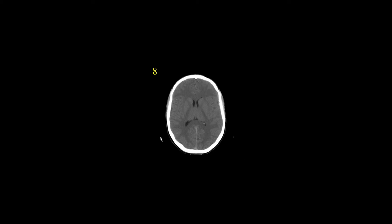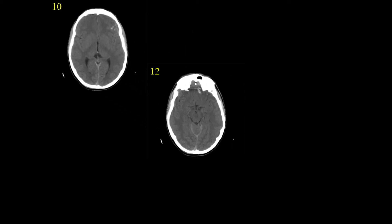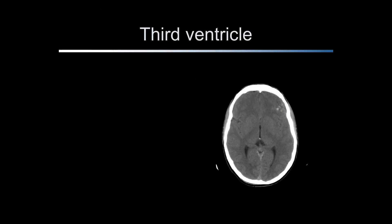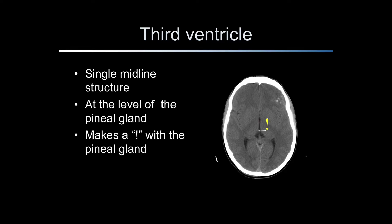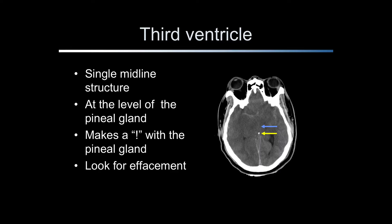The third ventricle is a single, midline, slit-like structure located at the level of the pineal gland. The pineal gland is typically calcified in adults and doesn't usually become calcified until after the age of six years. It has no blood-brain barrier and will appear enhanced with contrast. The third ventricle sits just anterior to the pineal gland and is seen here in yellow. The third ventricle makes an exclamation point with the calcified pineal gland. The effacement of the third ventricle is a sensitive finding for early mass effect due to extra-axial bleeding, tumor, mass, or edema.